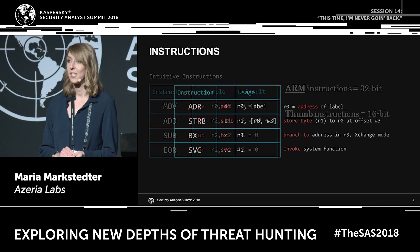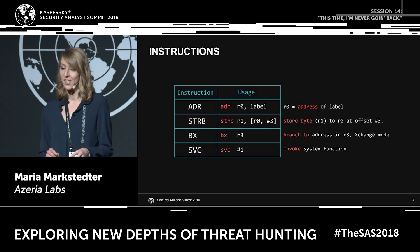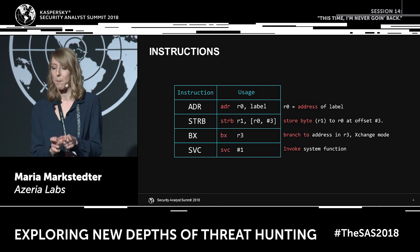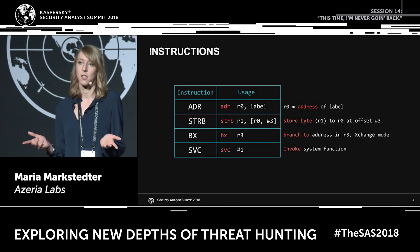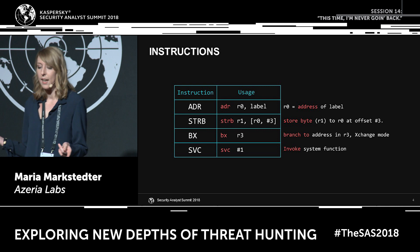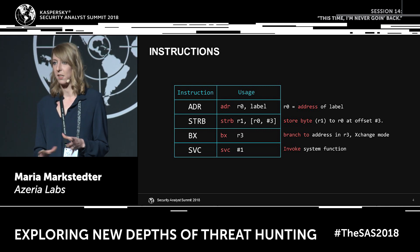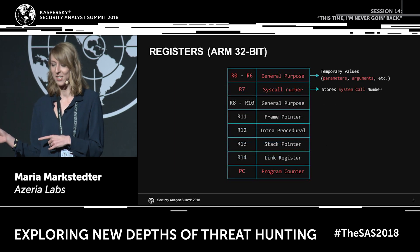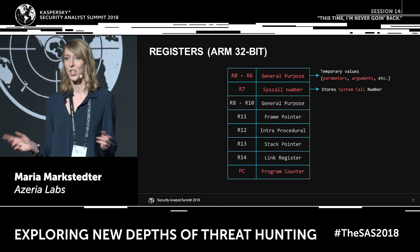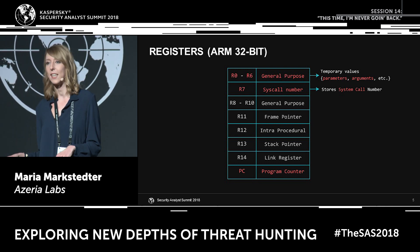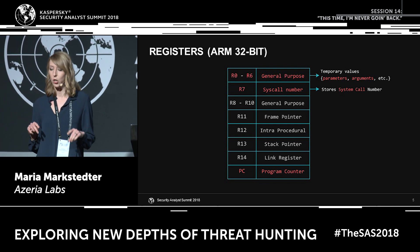The next four instructions are less trivial. The first one puts the address of a label into a register. Store byte stores a byte to the address found in R0 at offset 3. BX is like a jump in x86, and SVC — well, it's actually used to invoke system functions. Regarding registers, we only need to cover the general purpose registers because we will need them for our arguments, and R7 will contain our syscall number.